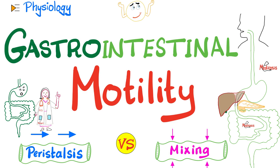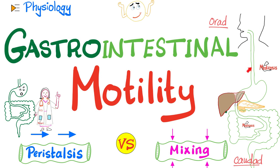Today we'll talk more about motility. We have two types: propulsive movement, or peristalsis, moving forward; and mixing or segmental movement, moving back and forth. Before we get started, remember this end is called oral and this is called anal. The direction going this way is called orad; the direction going the other way, caudally, is called caudad.